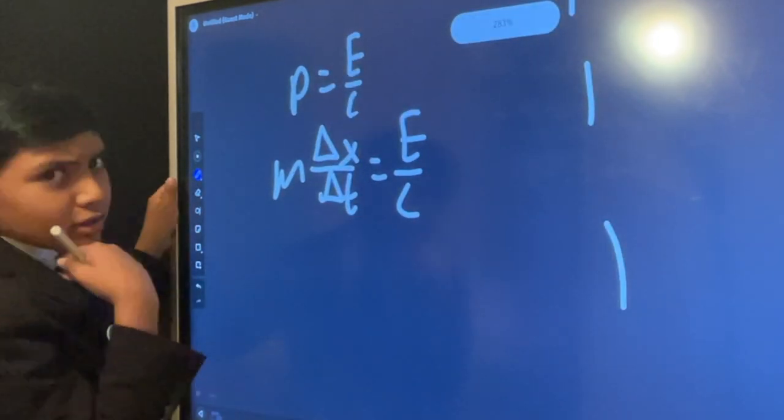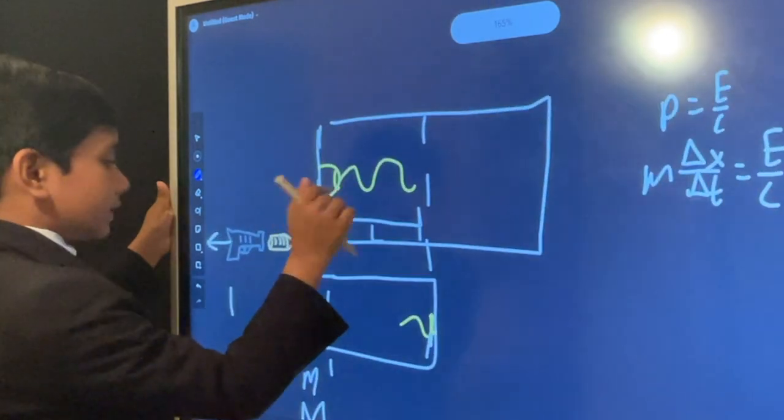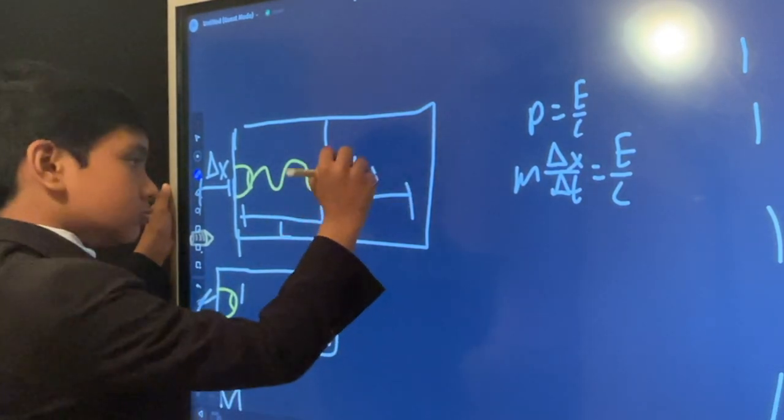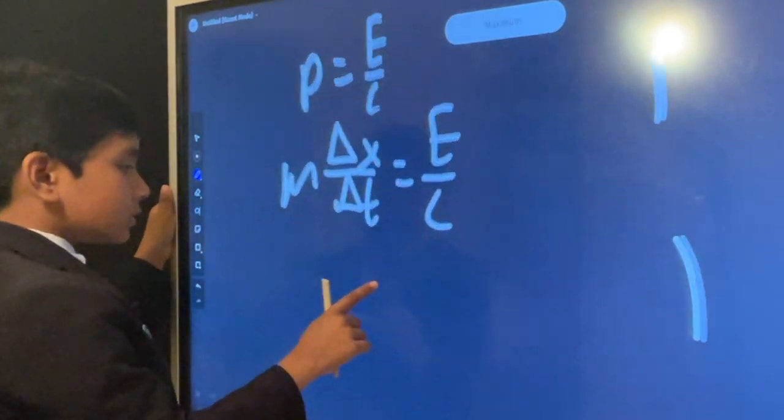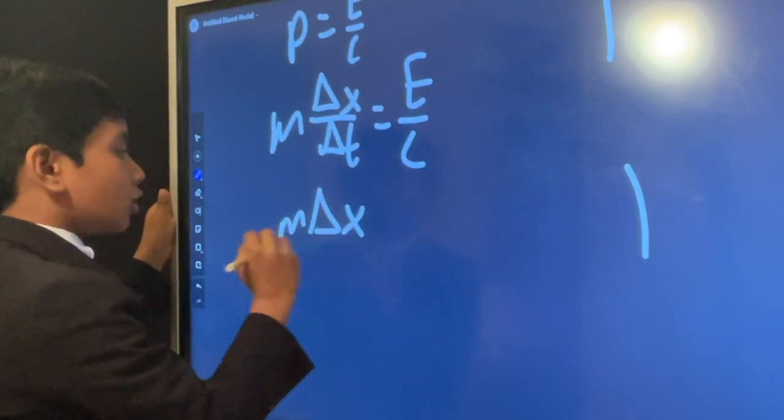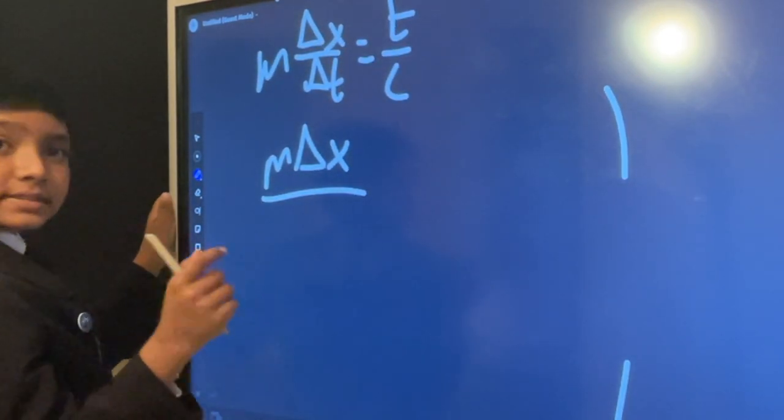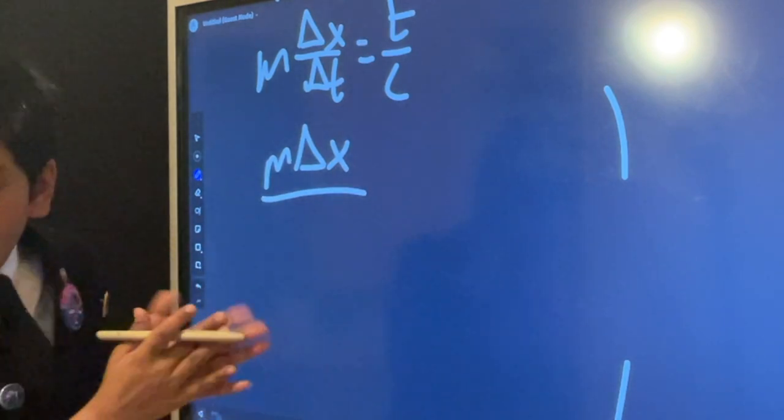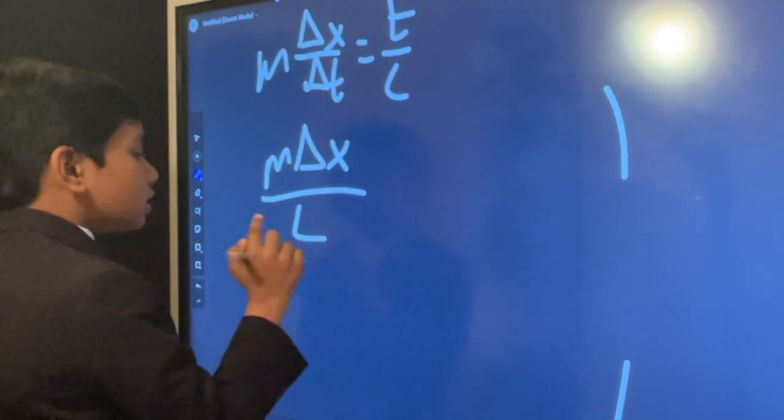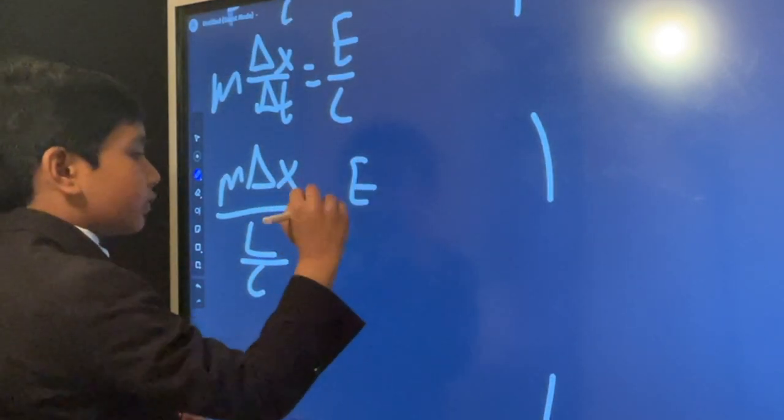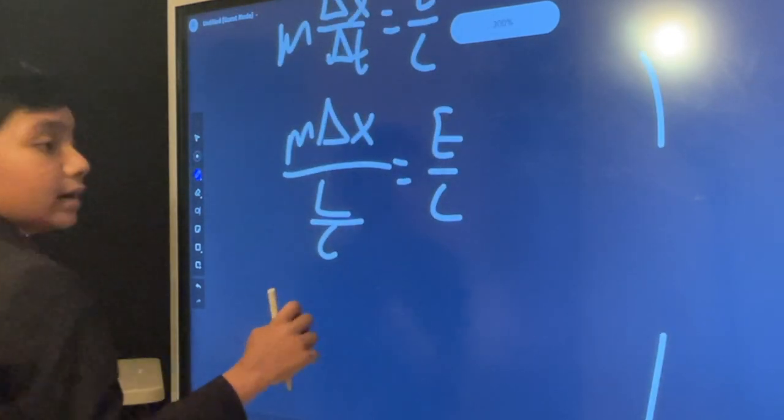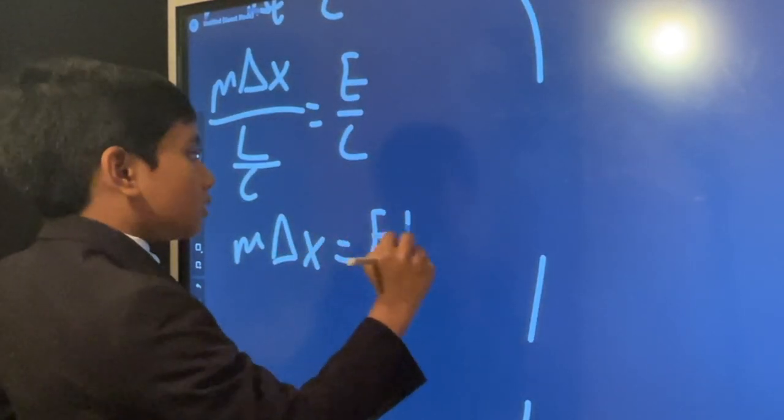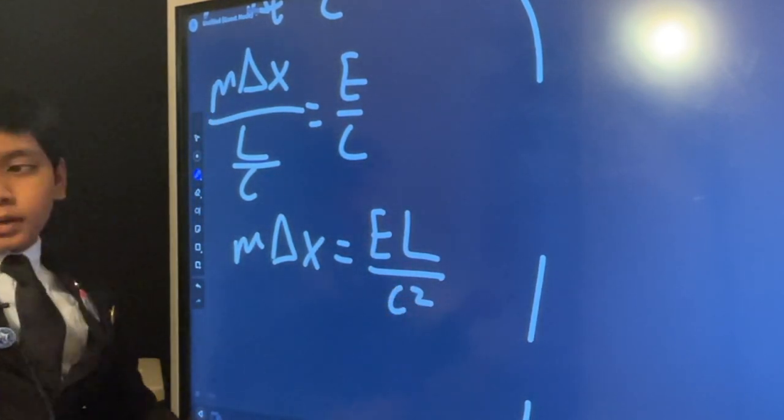And so this gives us M delta X over, what was delta T? Well, delta T is the time that is passed. The time that passes, it starts when the light is emitted and ends when the light gets to the wall. And so it's L divided by C equals E over C. So now multiply both sides by L over C and you get M delta X is equal to E L over C squared. It doesn't look promising so far, but I promise it gets better.